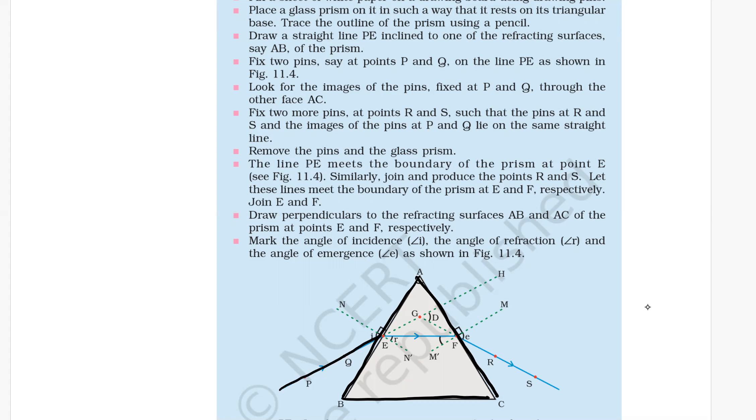Now fix two pins P and Q on the line PE as shown in the figure. After tracing the prism outline, make a line inclined to the prism, mark two points P and Q on that line, and fix two pins at those points.